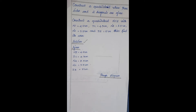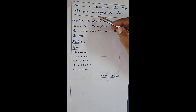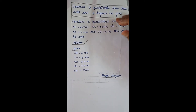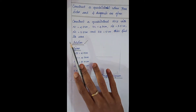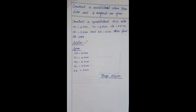Hi students, welcome to our channel. In this video we are going to see 8th mathematics geometry. The next problem: construct a quadrilateral NICE when three sides and two diagonals are given. The given data is NI = 4.5 cm, IC = 4.3 cm, NE = 3.5 cm, NC = 5.5 cm, IE = 5 cm. We also want to calculate the area.